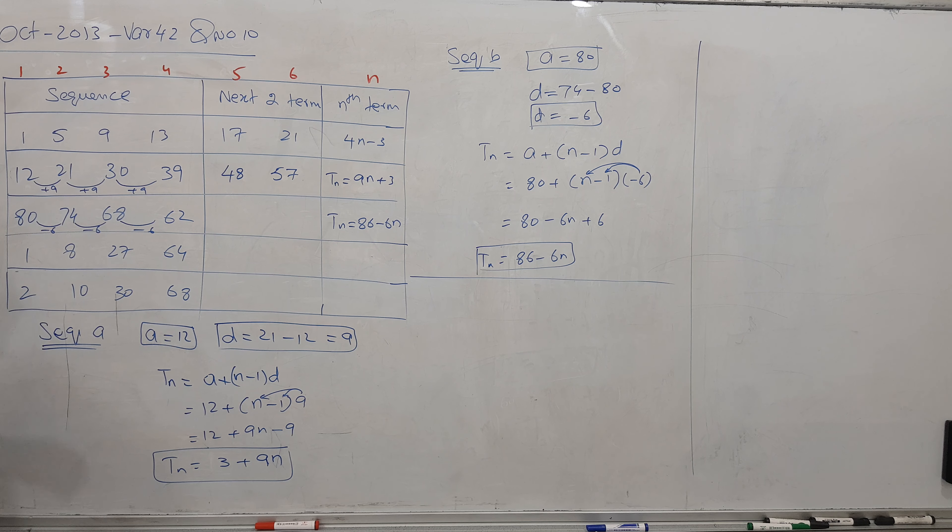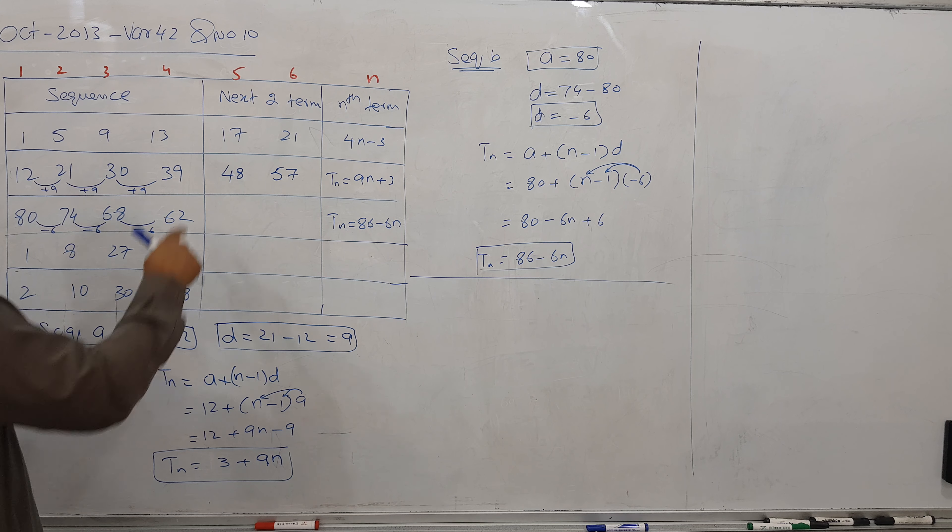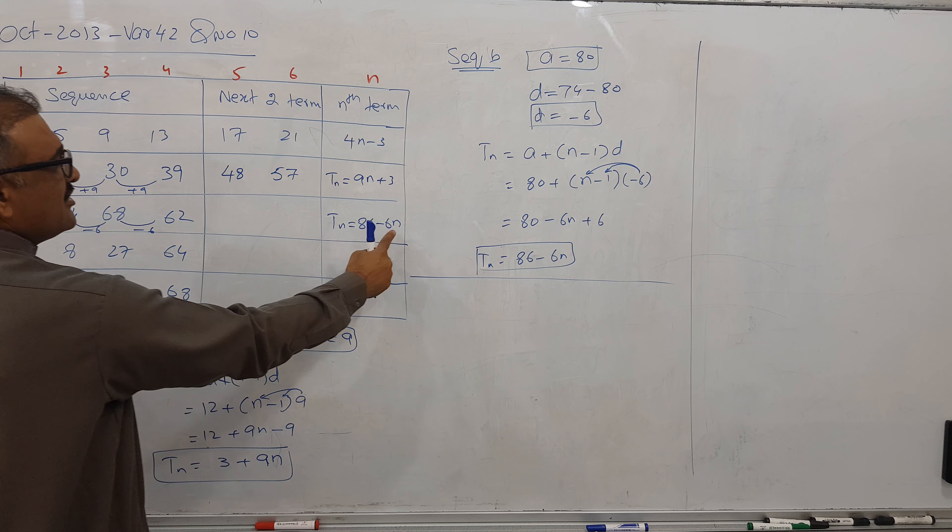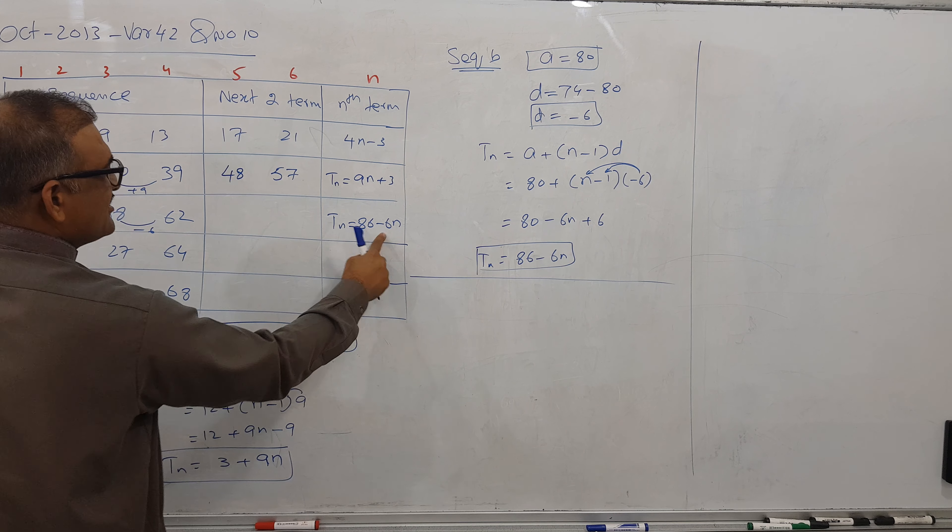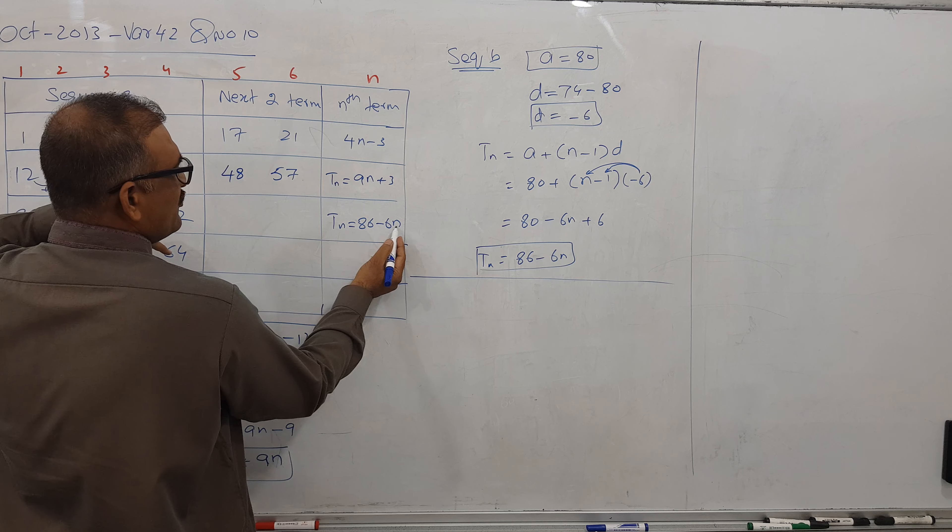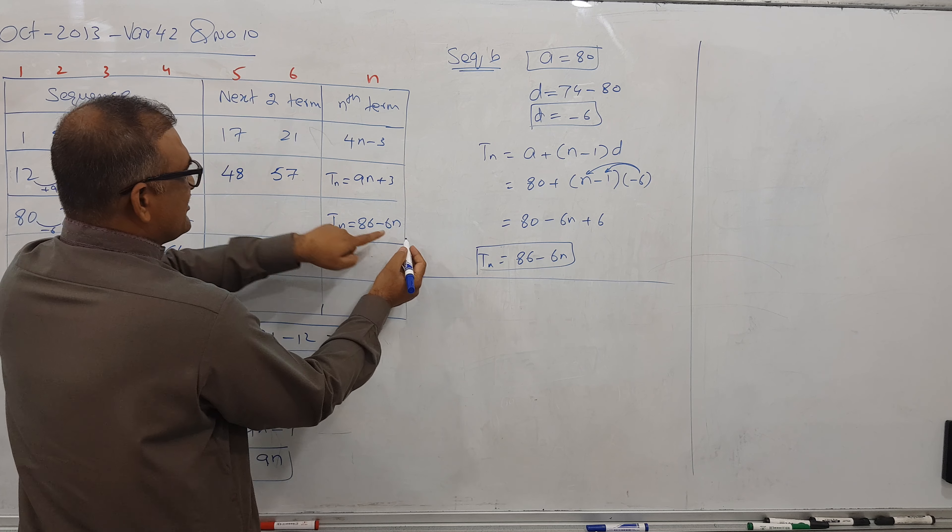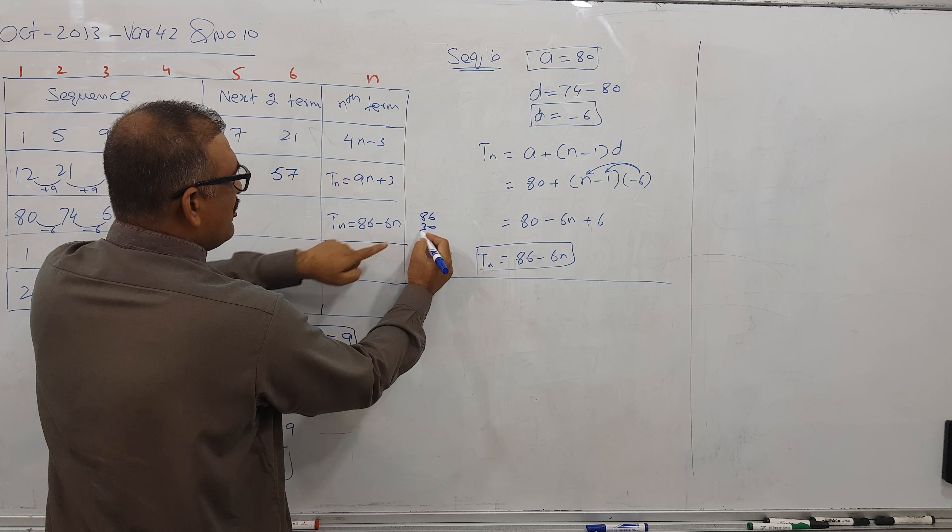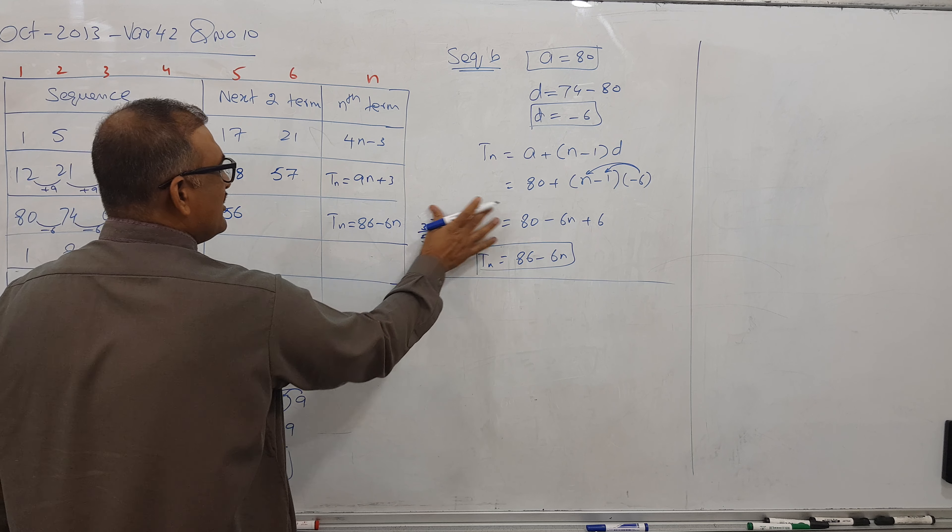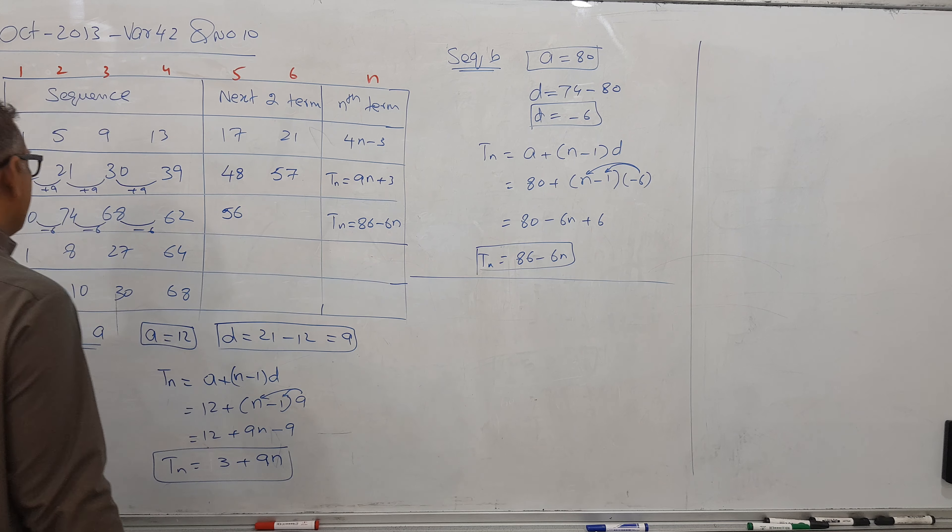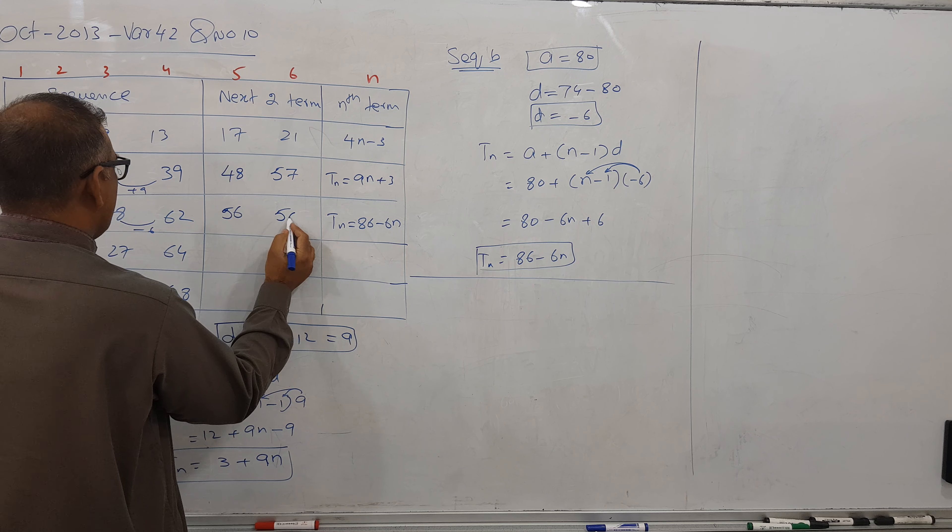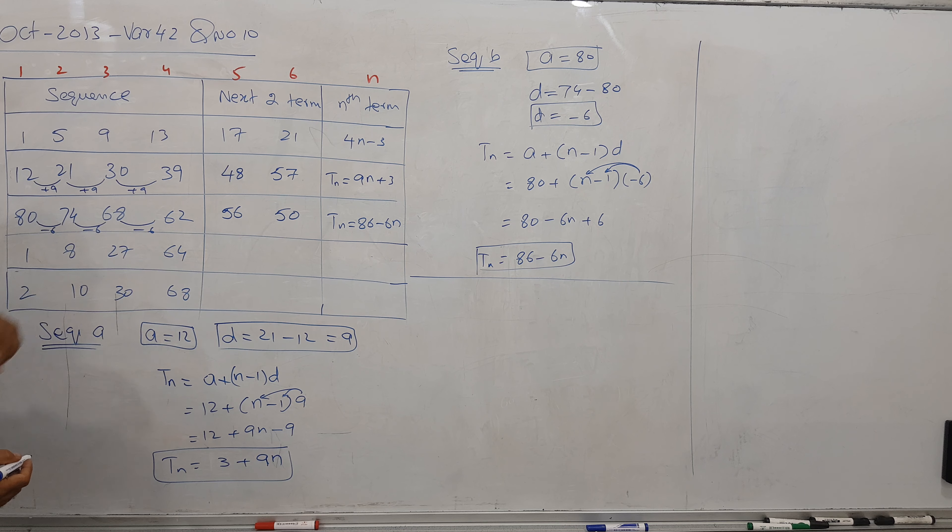Now if I'm looking for the fifth term, we can check. If I put 1 here, 86 minus 6 is 80, so match. Similarly if I'm looking for fifth term, put here 5. 5 times 6 is 30, so 86 minus 30 is 56. So this is coming 56. In a similar manner, if I go for this one, put 6 here, I get 50.